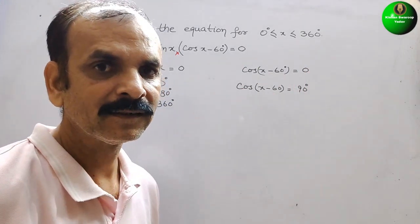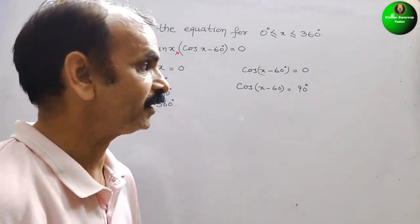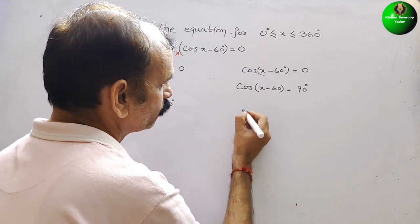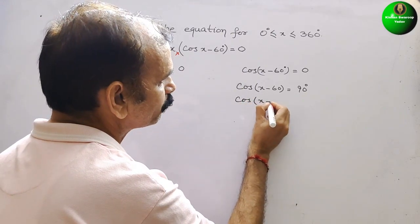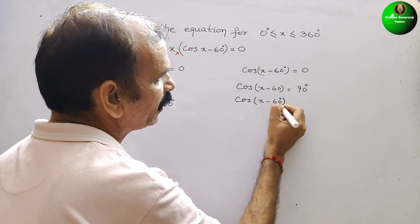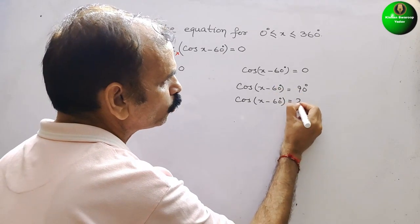And second, at 270 degree. So we can say cos(x - 60°) is equal to 270 degree.